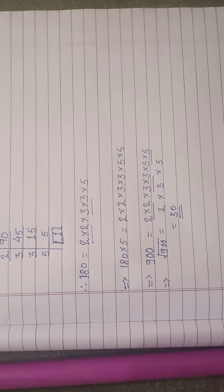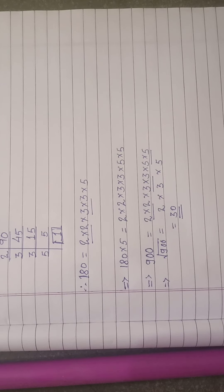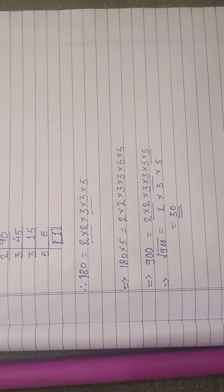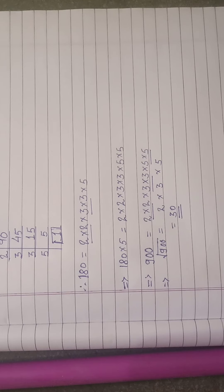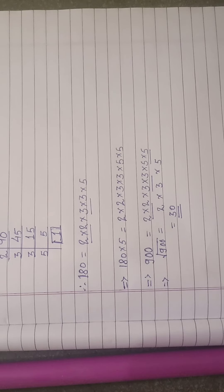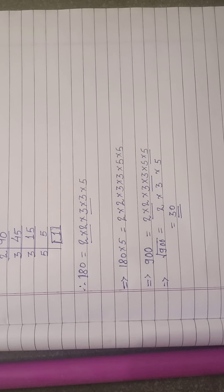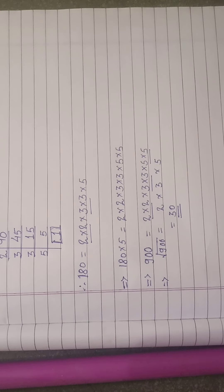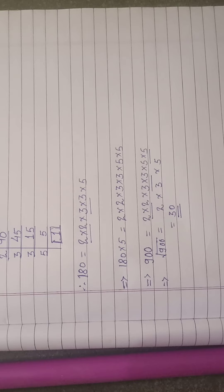And as yesterday we have done, square root of 900 will be one factor from 2's pair, one factor from 3's pair, and one factor from 5's pair, that is 30. We know that square root of 900 is 30, or square of 30 is 900. Isn't it, children?